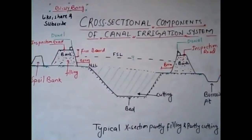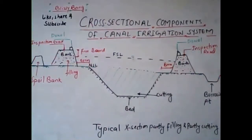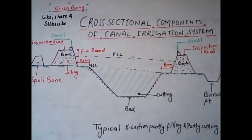The given figure is the typical cross-section of a partly filling and partly cutting irrigation canal system. The figure represents the various cross-sectional components associated with the canal irrigation system. We have the bank on two sides of the main canal, which is partly in cutting and partly in filling. We also have the berm, the dowel or dowla, the inspection road, the borrow pits, and the spoil bank.